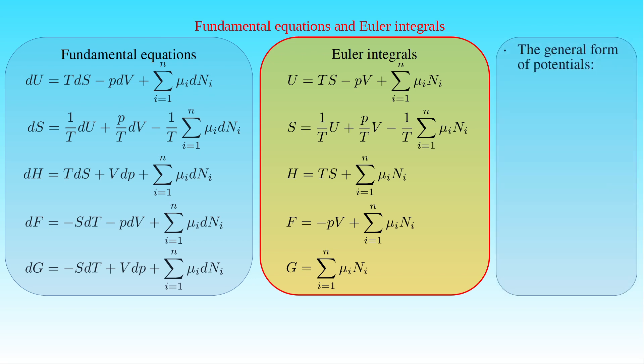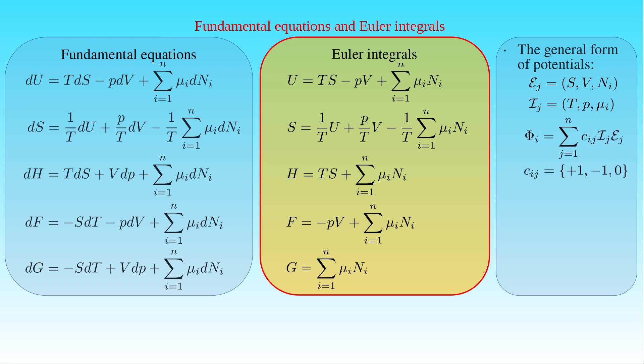We can write the Euler integrals in a general form. If we denote the extensive properties among the natural variables — such as S, V, and Nᵢ — by calligraphic E, and the intensive properties appearing in the Euler integrals — such as T, P, and μᵢ — by calligraphic I, then any potential Φ in the four independent Euler integrals can be written as the sum of Cᵢⱼ times Iⱼ times Eⱼ from j equals 1 to the number of terms. The multiplication factor Cᵢⱼ is defined as plus 1, minus 1, or 0 depending on the jth term in the ith Euler integral.